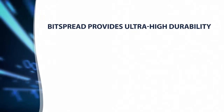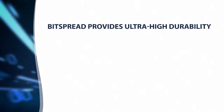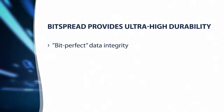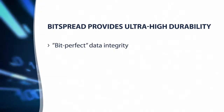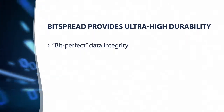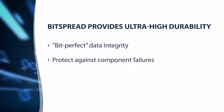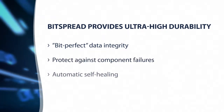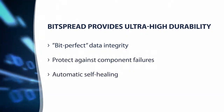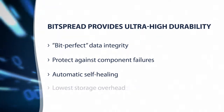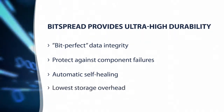Amplistore's patent-pending bit-spread erasure coding protects data in three ways. It ensures bit-perfect data integrity by protecting against all forms of corruption. It protects data against data loss due to component failures. It automatically self-heals corrupted data. Amplistore also provides this with very low storage overhead.